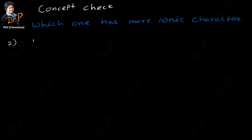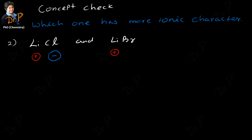Let's do another example. This time we'll take lithium chloride and lithium bromide — which one has more ionic character? This time we have a common cation, so we are looking at the same charge and size. Our anions are chloride ion and bromide ion, and you can find bromine right below chlorine in the periodic table, so bromide has the larger size.